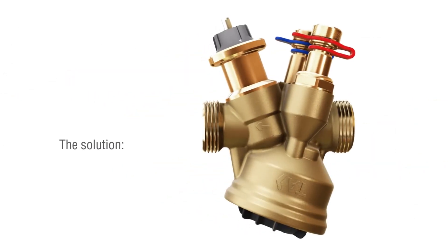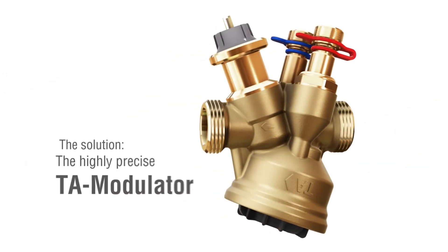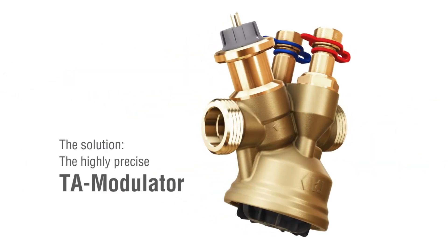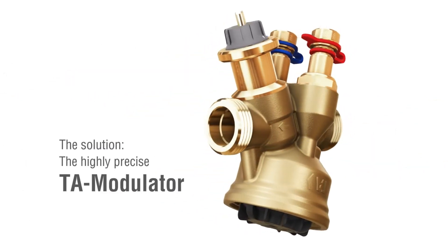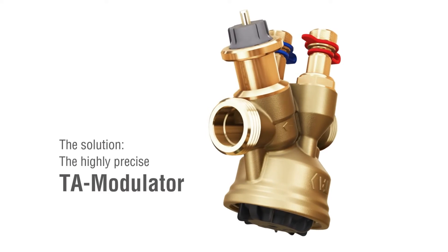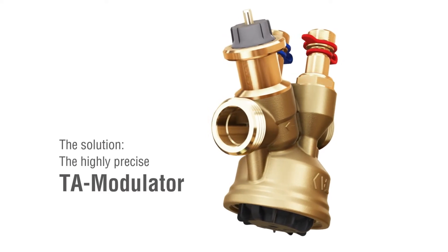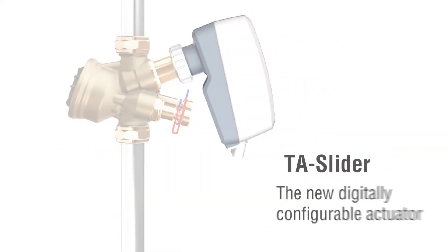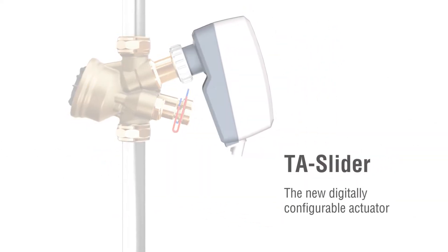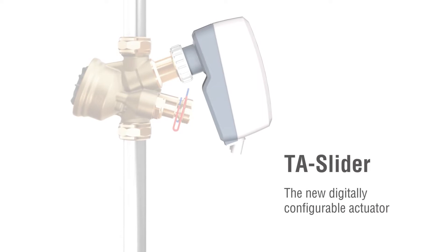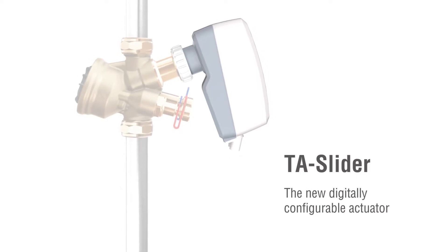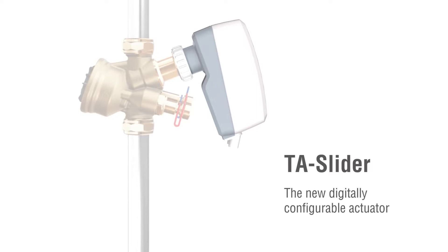The solution is modulating control with a highly precise pressure-independent balancing and control valve — TA Modulator. The digitally configurable actuator TA Slider connects TA Modulator to all building automation systems.